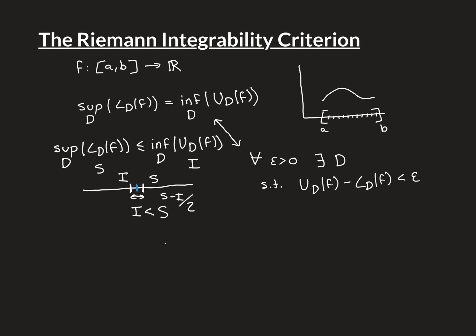I is the greatest lower bound of all of the upper Riemann sums. So the number I plus S over 2 cannot possibly be a lower bound for the set of all upper Riemann sums — if it were, that would contradict I being the infimum of that set. So there must exist an upper Riemann sum that is strictly less than it, and all upper Riemann sums are greater than or equal to I. So I can find an upper Riemann sum over dissection D1 that is strictly less than I plus S over 2.